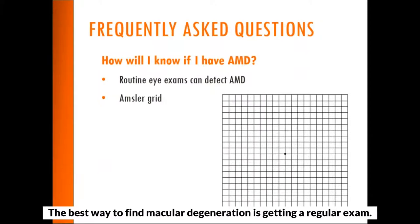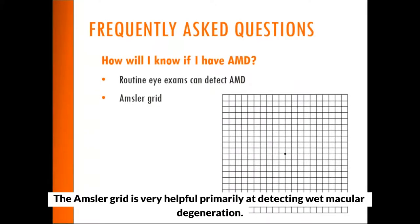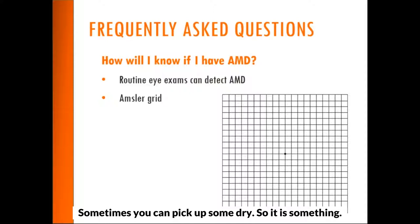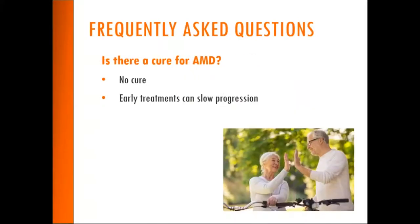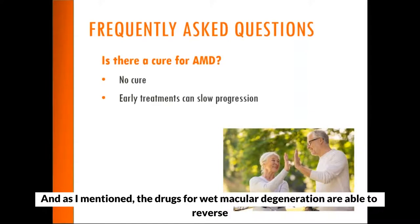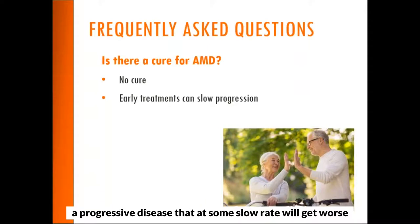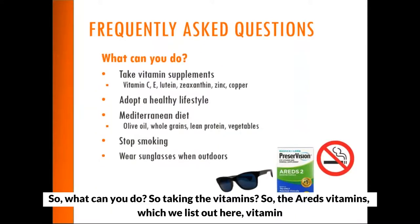The best way to find macular degeneration is getting a regular exam — we're looking for those drusen and changes in your retina. The Amsler grid is very helpful, primarily for detecting wet macular degeneration, and can sometimes pick up some dry as well, so it is something we recommend if you do have it. Is there a cure? No. There is no cure. The drugs for wet macular degeneration are able to reverse some of the vision loss and do a good job at stabilizing vision over the long run, but it is a progressive disease that at some slow rate will get worse over time.